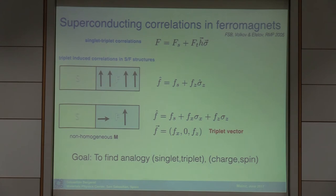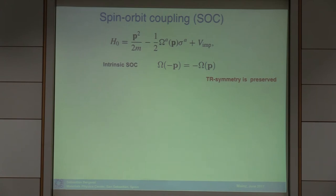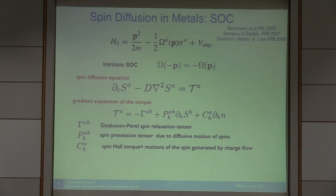The goal of the talk is to find the analogy between singlet-triplet coupling in superconducting systems and charge-spin coupling in normal systems with spin-dependent fields. For that, I start by adding a time-reversal-symmetry-preserving field — a spin-orbit coupling — to the Hamiltonian. In normal metals in diffusive systems, one can derive from this Hamiltonian a kinetic equation, and from that a spin-diffusion equation of this general form. Looking at the gradient terms, we identify a relaxation tensor — known as the Dyakonov-Perel relaxation in diffusive systems — which may be anisotropic, plus a precession term.